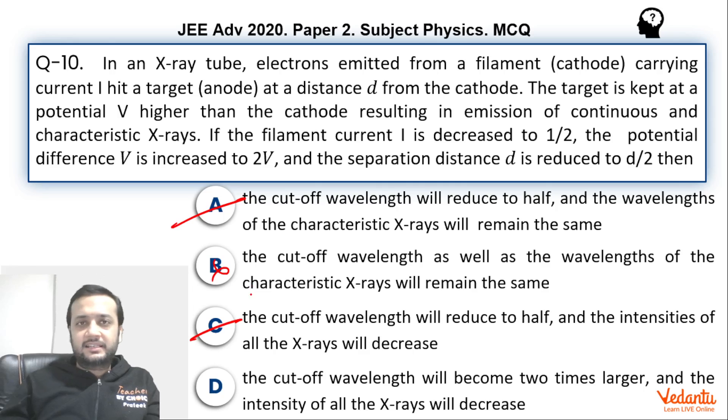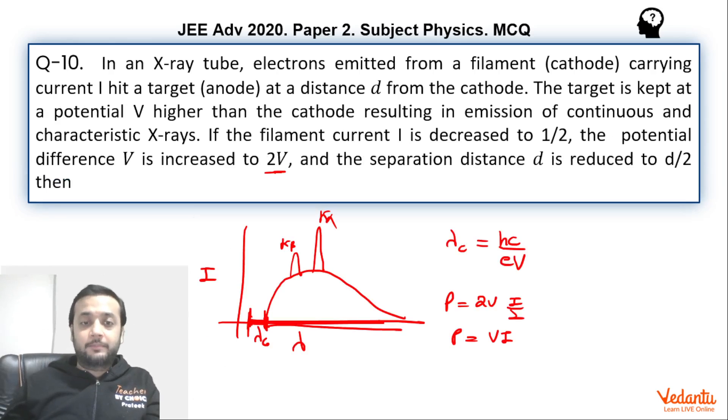Why did I say that this has an infinitesimally small amount of ambiguity? The reason is that some students thought that it might happen that if we are decreasing the lambda cutoff, then there might be some characteristic X-rays which were not emitted before. They might start getting emitted.